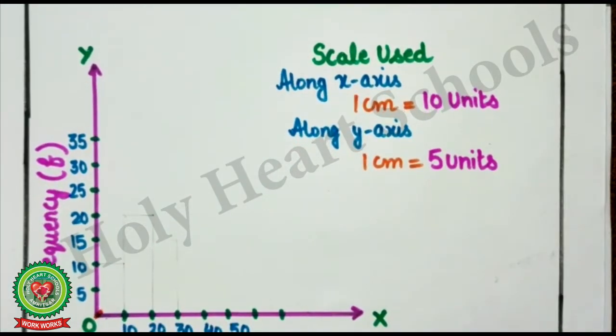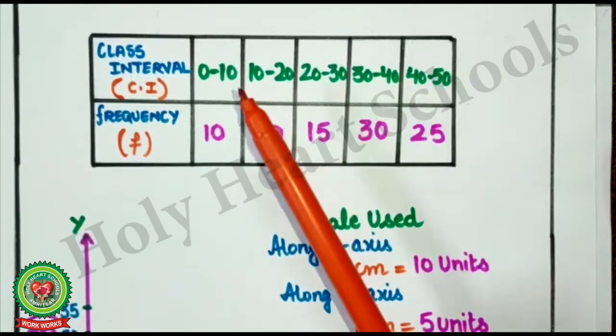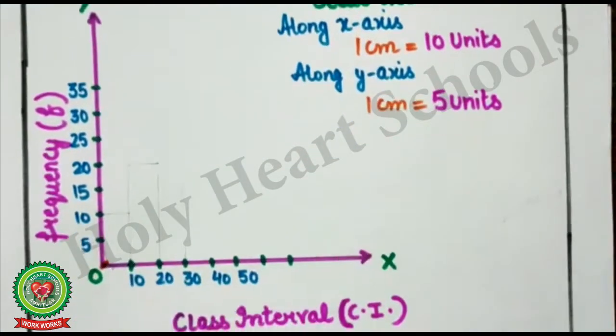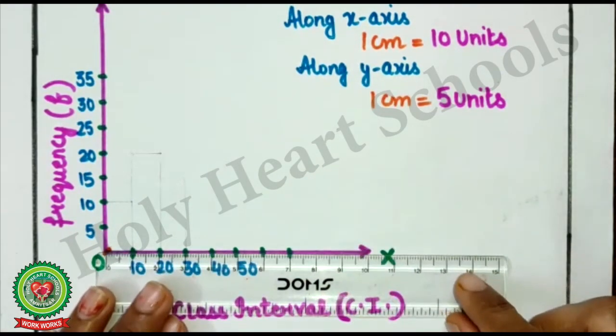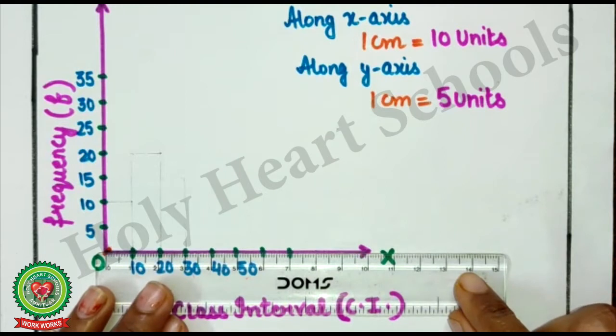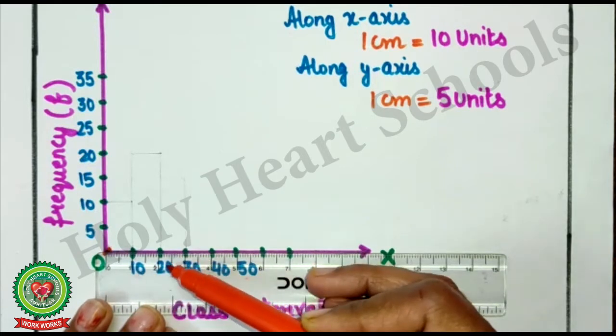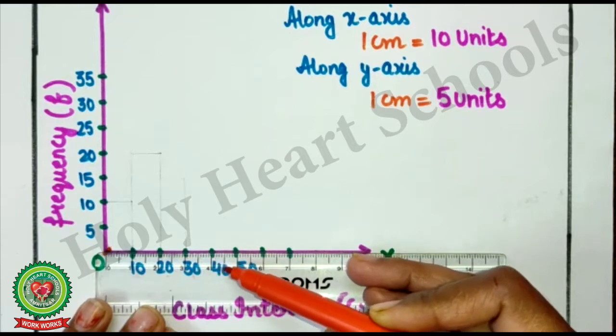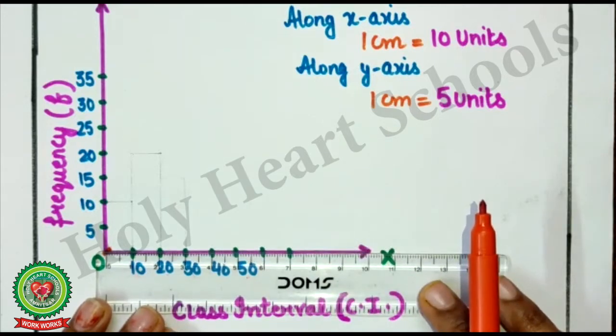As I have told you, first information along X-axis. Here you can see, 0-50 intervals are given. So, what I will do, using scale, I will take gap of 1-1 cm. Here, with 1 cm, I will write 10, 2 cm, 20. Then at 3, 30. At 4, 40. At 5, 50. So, in this way, I have taken distance of 1 cm.